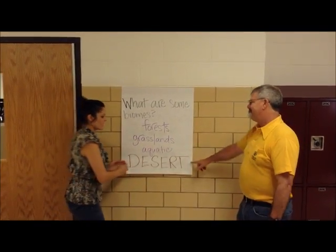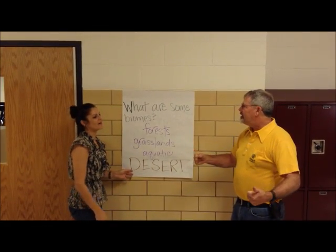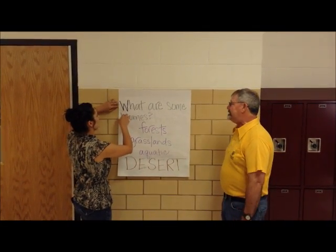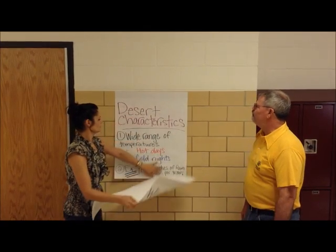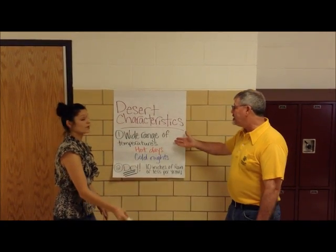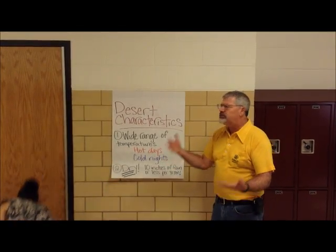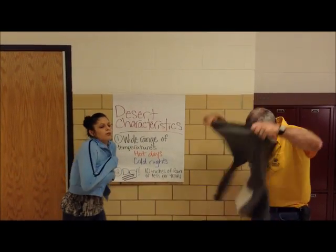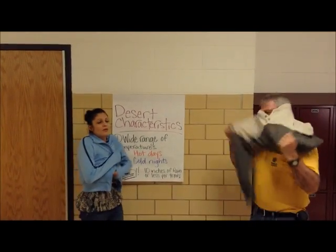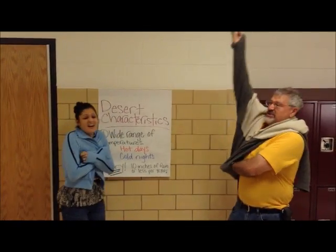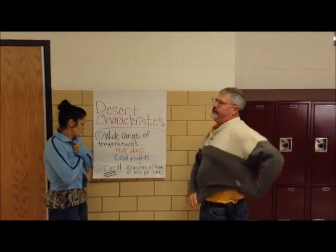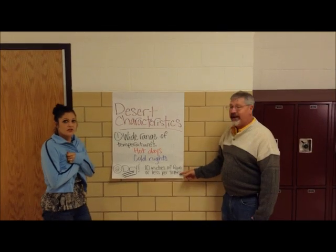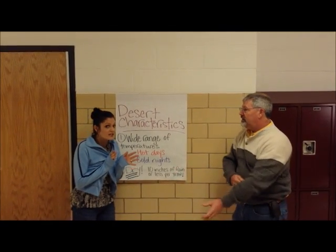And the one we're going to talk about today — desert! That says desert. I know, I wish we had dessert. So what do we know about the desert? It's got a wide range of temperatures. It's really hot during the day, which we all knew, but did you know it's really, really cold at night — so cold you'd want to wear coats, jackets, and sweaters. And it's really dry: 10 inches or less of rain per year. The whole year they get 10 inches or less of rain.